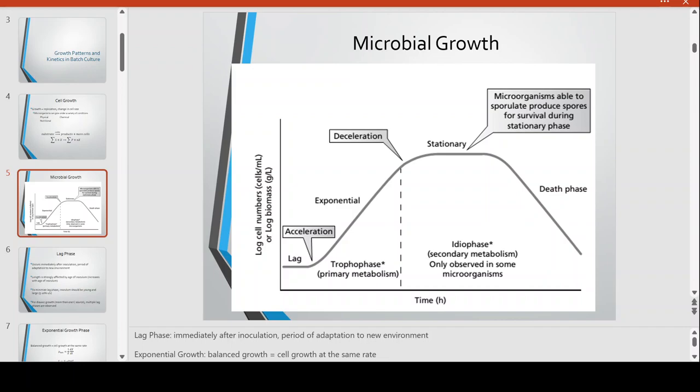This microbial growth curve is in batch culture. There will come a time that the finite nutrients will be exhausted. The growth will decelerate and enter the stationary phase. In the stationary phase, this is the period where cells start to compete against one another for the limited resources that are still available.